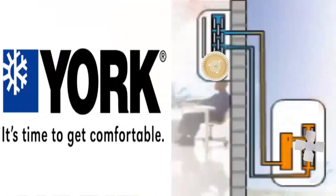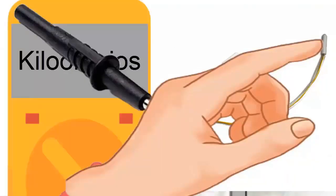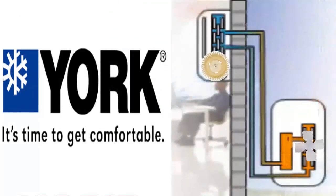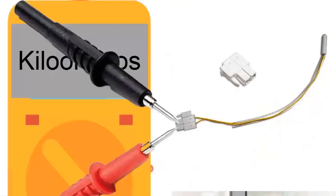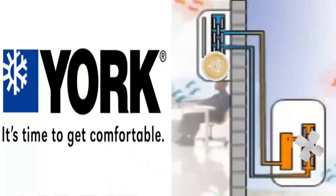Step E: If you have the sensor's resistance and temperature chart, compare the measured value with the chart values. If you don't have the chart, measure the resistance while rubbing the sensor with your hand — the resistance should decrease. Step F: The resistance value should never be zero or infinite. Step G: With the sensor connected and the electronic board powered on, measure the voltage supplied by the board with the multimeter set to the DC voltage scale. This value should be around 2.5 volts.